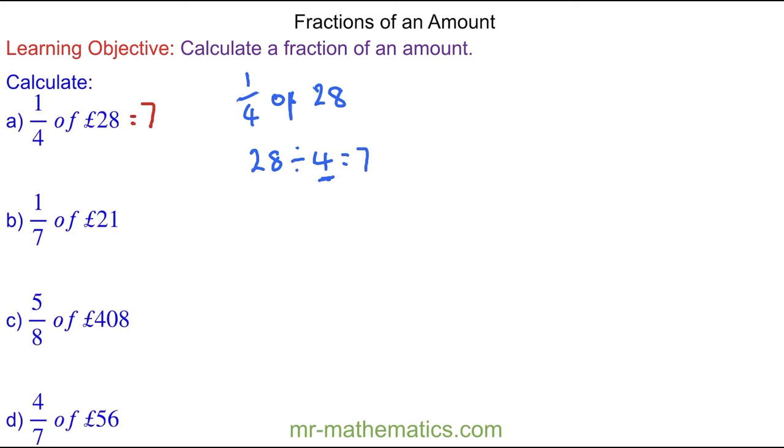For question B, one seventh of 21. Well, this time we're going to divide the 21 by the 7. So we have 21 divided by 7, which is 3. So one seventh of 21 is 3.